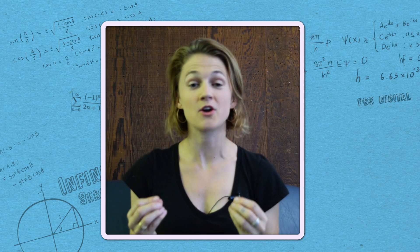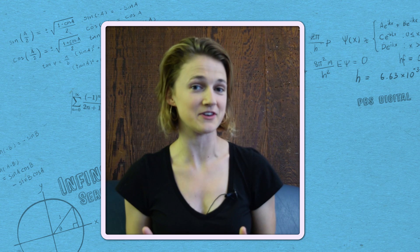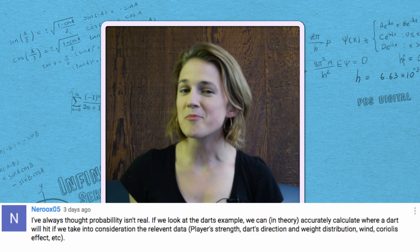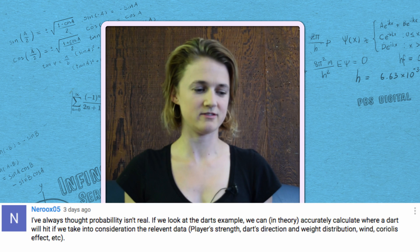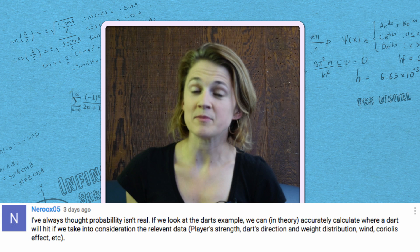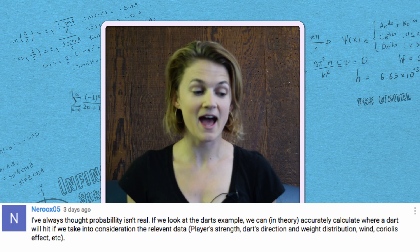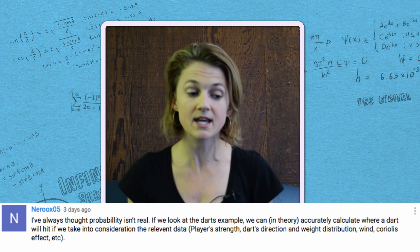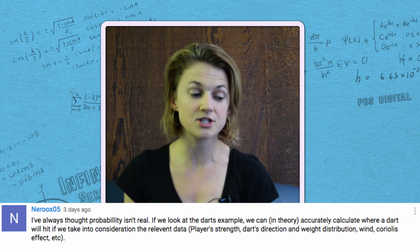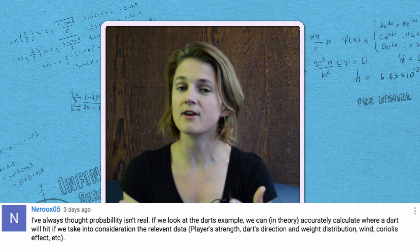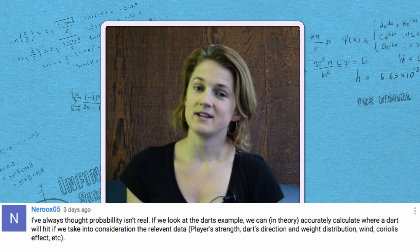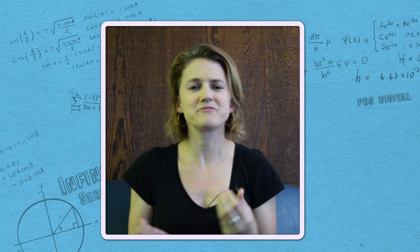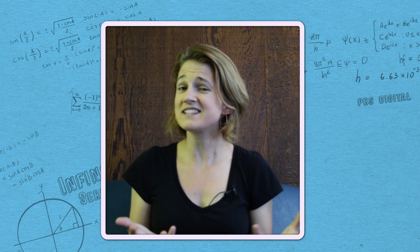Thanks for all the awesome comments on our episode about probability theory. So, Nero Ox said, I've always thought probability isn't real. If we look at the darts example, we can, in theory, accurately calculate where the dart will hit if we take into consideration the relevant data, like the player's strength, the dart's direction, the weight distribution, etc. That's a good point. There's a way in which probability is like a catch-all for the unknowns. And I think that's kind of cool.